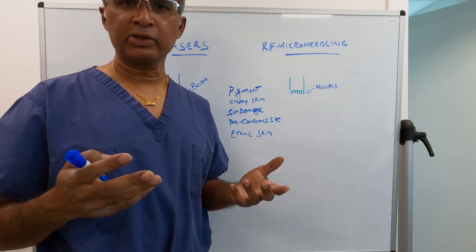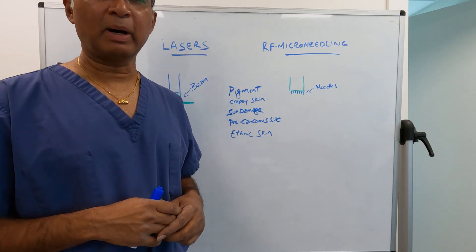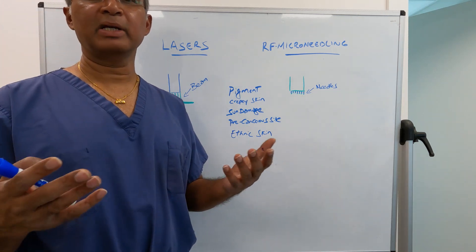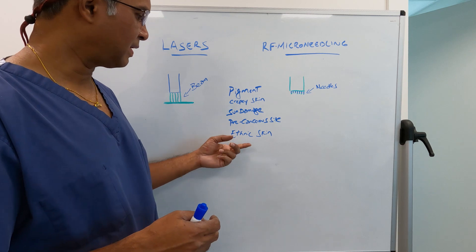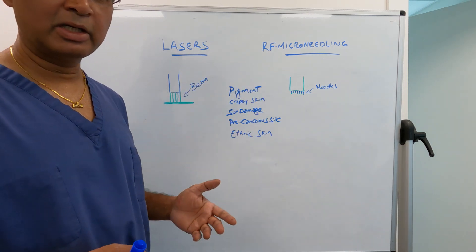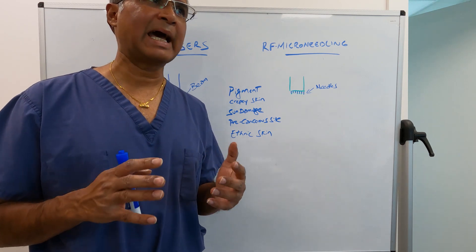For example, in darker skin you may have melasma. In lighter skin you may have all kinds of spots and irregular pigmentation. Precancerous sites, like precancerous lesions from Florida sun that you can easily identify, and also ethnic skin.